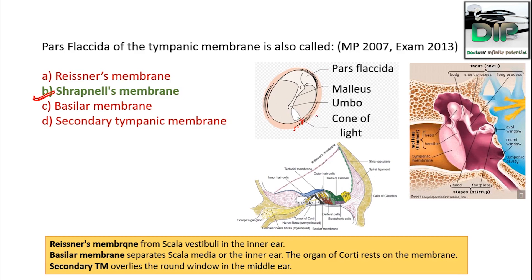Reissner's membrane separates the scala vestibuli from the scala media in the inner ear. The basilar membrane separates the scala media from below, and the organ of Corti rests on it. The secondary tympanic membrane overlies the round window in the middle ear.